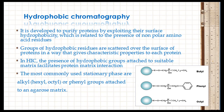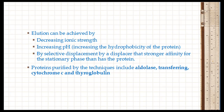These groups can be exposed by the addition of salt ions, which preferentially disrupt the ordered water film — this is the basis of salting out using ammonium sulphate. In HIC, hydrophobic groups attached to suitable matrices facilitate protein-matrix interaction. The most commonly used stationary phases are alkyl groups — specifically hexyl and octyl — or phenyl groups attached to agarose matrices.